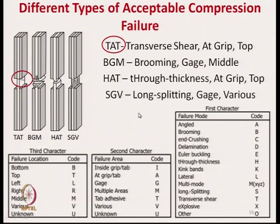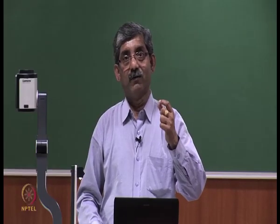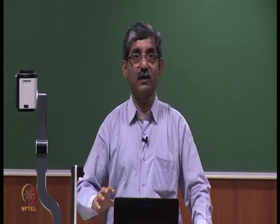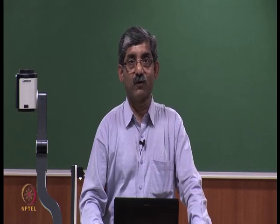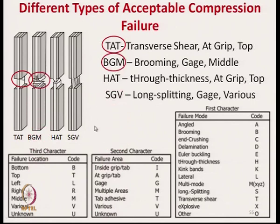The next code is BGM: B stands for brooming — during compression, brooming takes place and the composite material splits out. Failure mode is B, area is at gauge in between the jaws, and location is at the middle. HAT indicates through-thickness failure at the grip point and top location. SGV means long splitting at gauge with various failure locations.